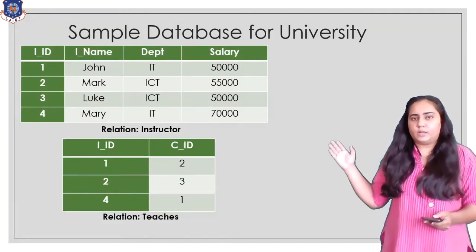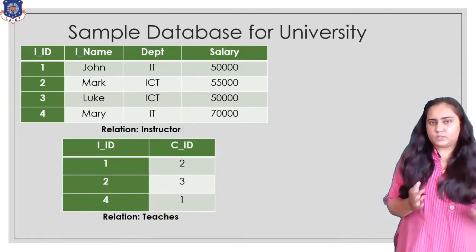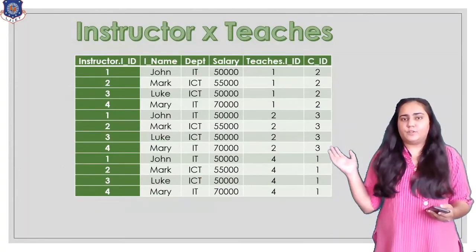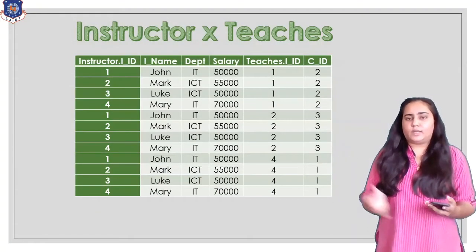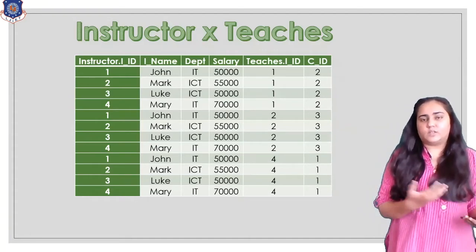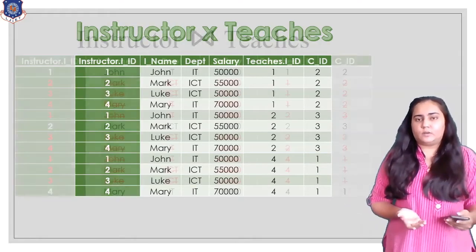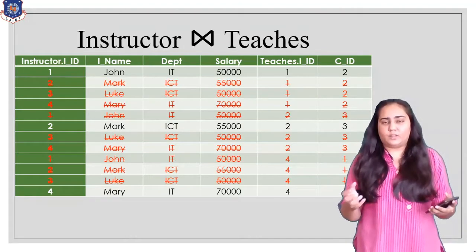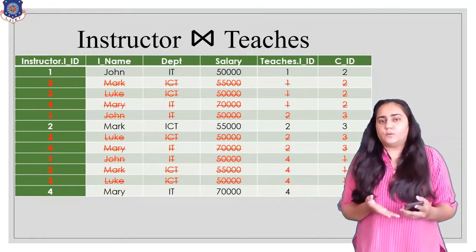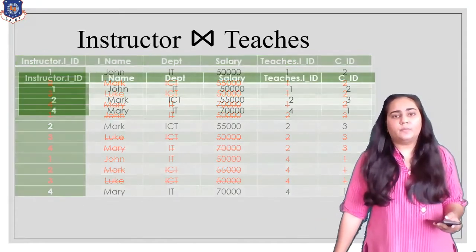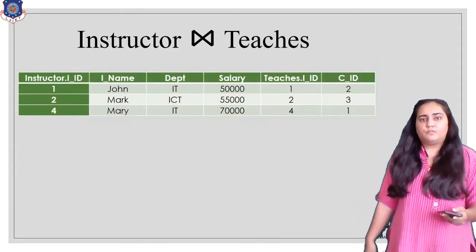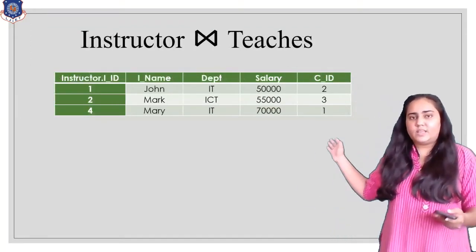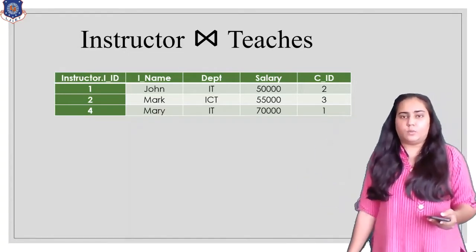Consider just the instructor and teachers tables. If you do instructor cross teachers (Cartesian product), you get 12 rows — four rows in instructor times three in teachers — with six total columns. If you do a natural join between instructor and teachers, all rows where the instructor ID does not match the ID in teachers are removed (marked red). What remains is only three rows, and one of the duplicate i_id columns is eliminated, giving you the final natural join result without a sigma condition.